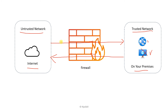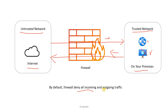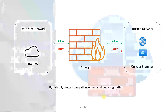A firewall filters your network's incoming and outgoing traffic. It inspects all traffic passing through and protects your network from untrusted sources. By default, the firewall denies all incoming and outgoing traffic, and rules define what traffic is allowed and what is denied.